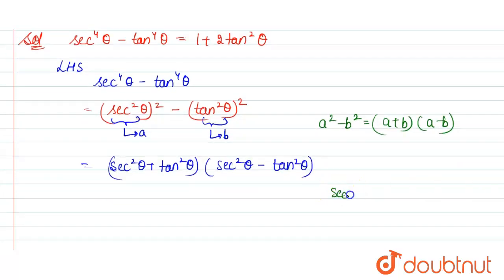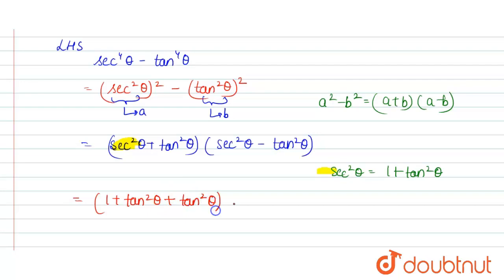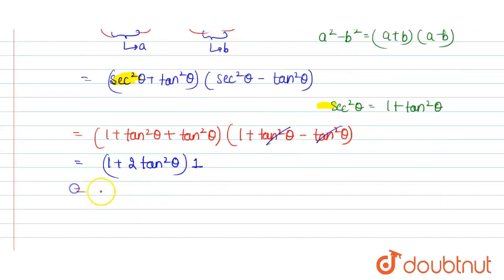We know that sec²θ equals 1 plus tan²θ. So we can write this expression as (1 + tan²θ + tan²θ) into (1 + tan²θ − tan²θ). Here the tan²θ terms cancel in the second bracket, giving us (1 + 2 tan²θ) into 1, which equals 1 plus 2 tan squared theta.